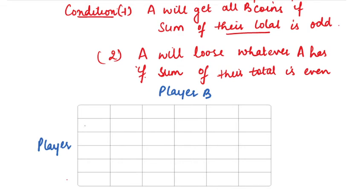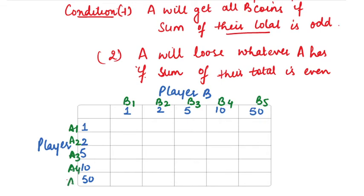Now what are the coins they are having? 1, 2, 5, 10 and 50 as mentioned in question. Similarly B is also having 1, 2, 5, 10 and 50. So basically these coins are mentioning the strategies. This is B1 strategy, this is B2 strategy of having 2 coin, this is B3 of 5 coins, B4 and B5. So now here it is A1 strategy, A2 strategy, A3, A4 and A5.